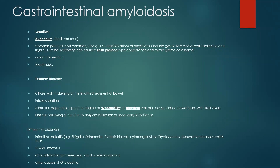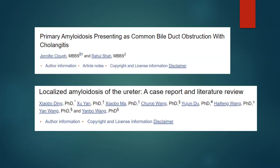Differential diagnosis for this appearance of gastrointestinal involvement includes infectious enteritis, bowel ischemia, and other infiltrative processes like lymphoma or any other cause of gastrointestinal bleeding. Regarding other system involvement, most of these are case reports. There have been cases reported involving the CBD causing biliary obstruction and cholangitis, as well as ureteric involvement, as is the situation with our patient.